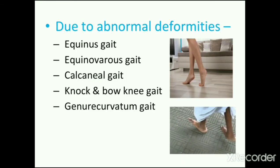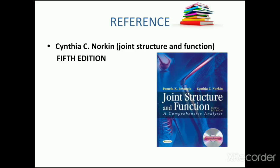Here are some gait patterns due to abnormal deformity. First, equinus gait — present due to plantar flexor contracture; the patient walks on their toes. Second, equinovarus gait — the patient walks on the outer border of the foot, for example in CTEV. Third, calcaneal gait — paralysis of plantar flexors causes dorsiflexor contracture, and the patient walks on the heel. Here is a reference for abnormal gait patterns.